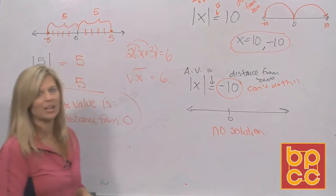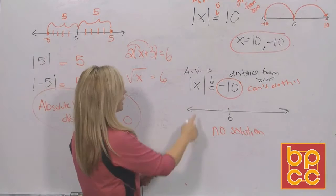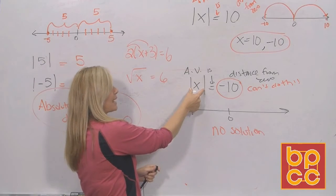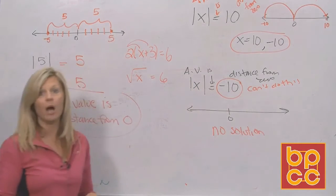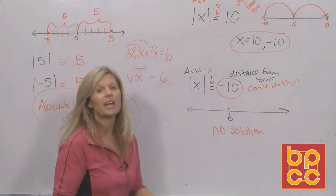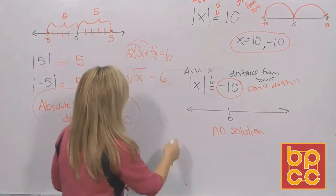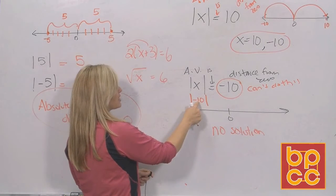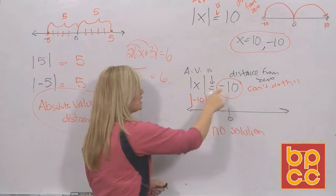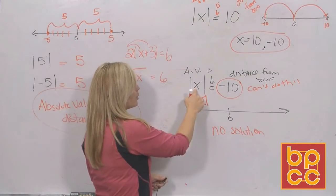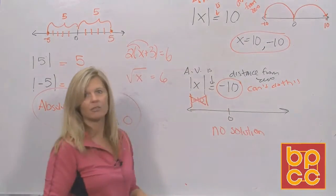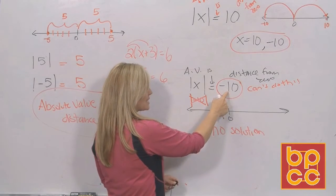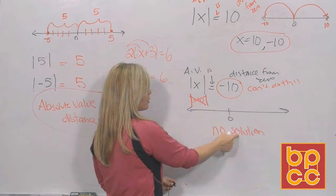You might think the answer is 10 — let's check it. If we put 10 in the absolute value bars, it makes the number come out positive. Is that positive equal to negative 10? No. So 10 doesn't check. You might try negative 10, but the absolute value bars are going to make that positive too. Is that equal to negative 10? No. There's no number you could put in absolute value and make it spit out a negative. Absolute value is a distance, and the number on the right side has to be positive. So there is no answer here — no solution.